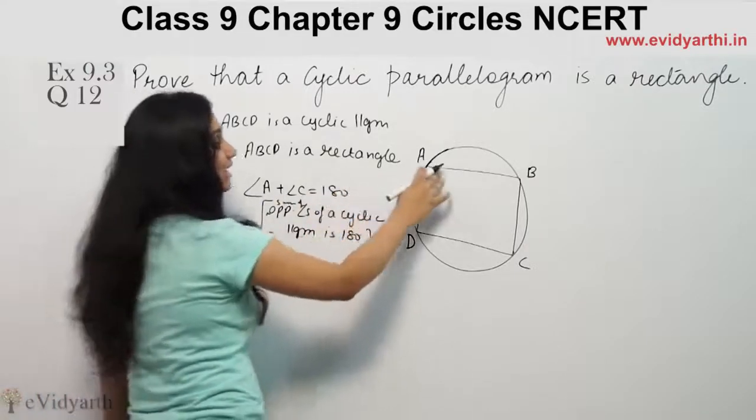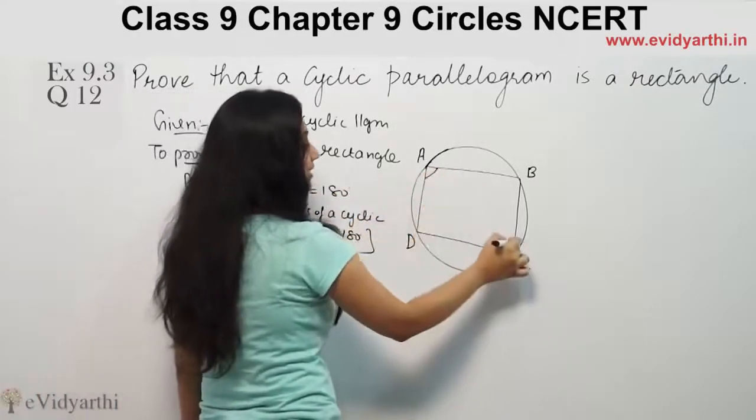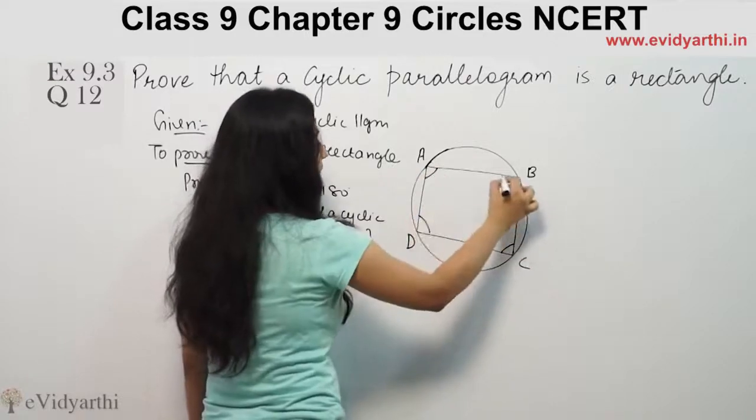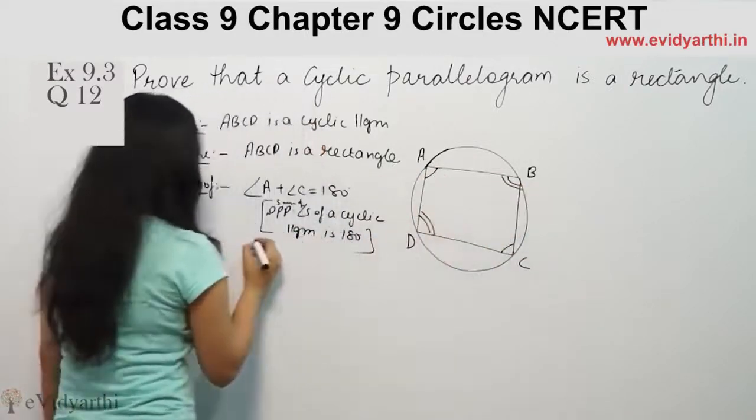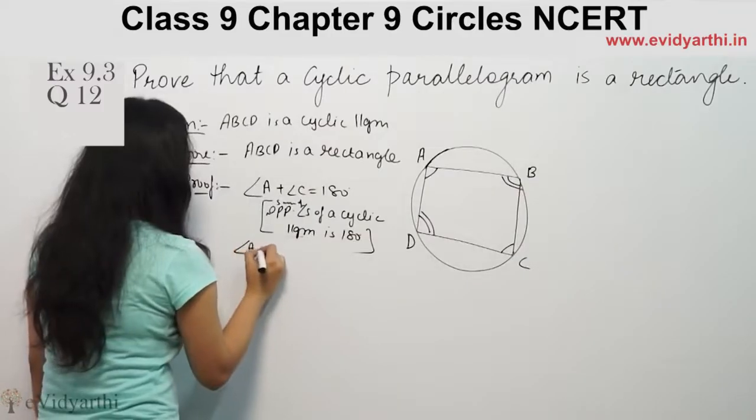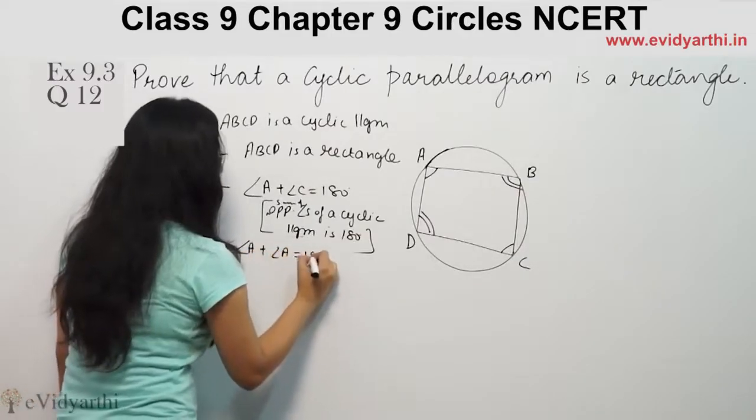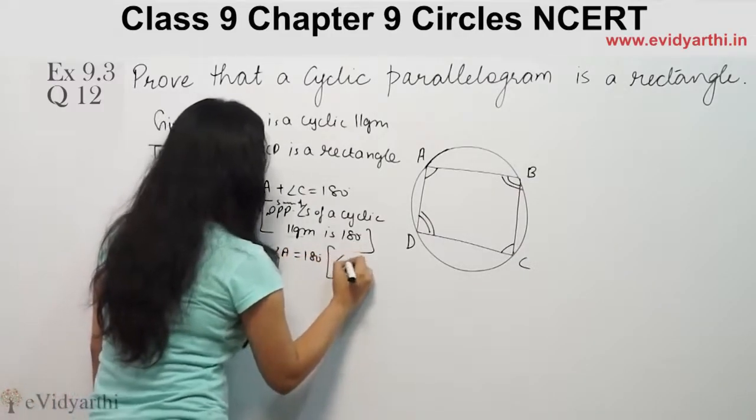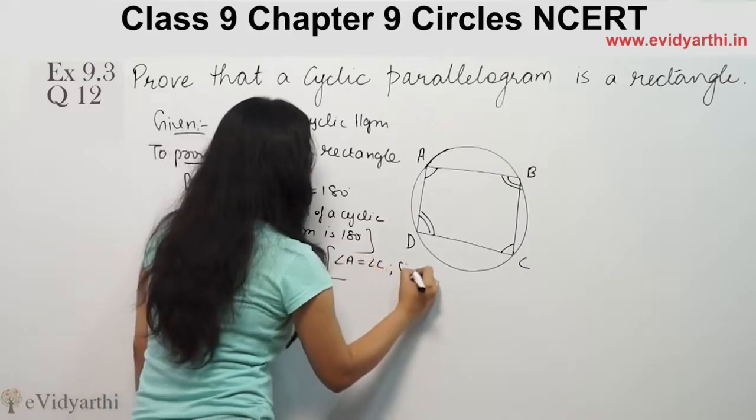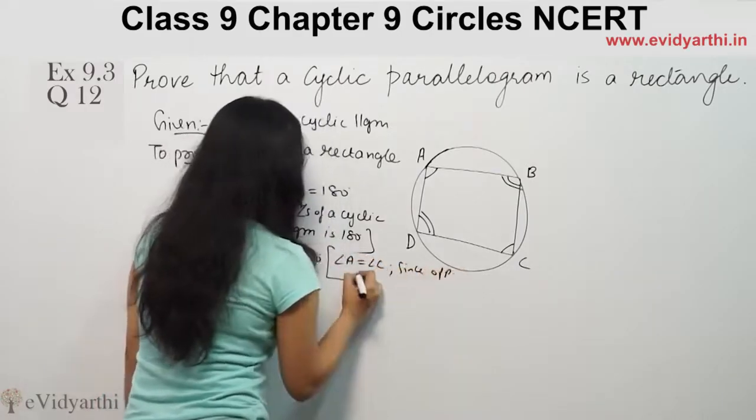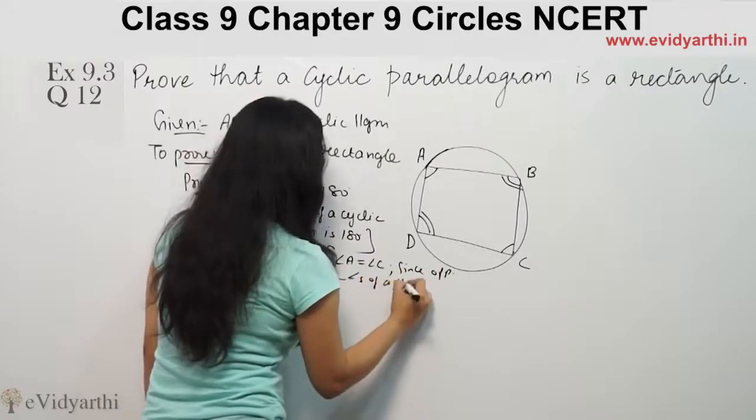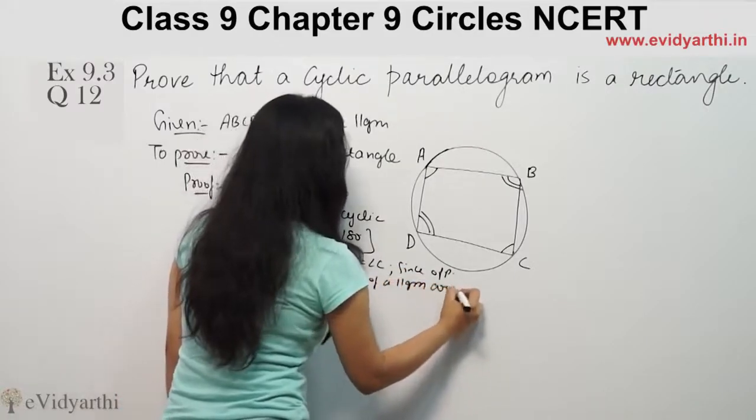Since opposite angles of a parallelogram are equal, angle A equals angle C. Therefore, angle A plus angle A equals 180 degrees.